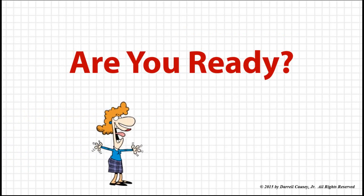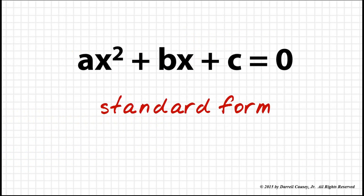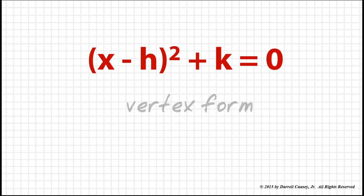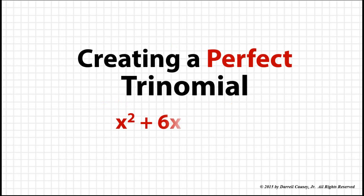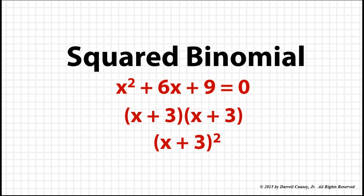Are you ready? All right, let's get started. First, we're going to look at the standard form, turn it into the vertex form. And then using the vertex form, we're going to create a perfect trinomial, which is a squared binomial. And you can see the example there.